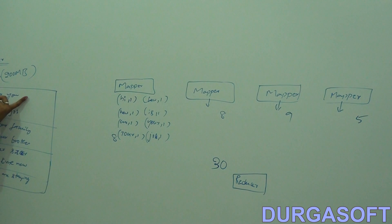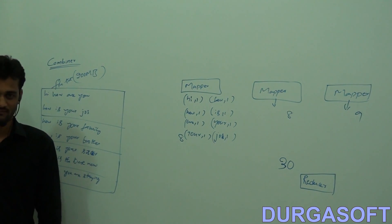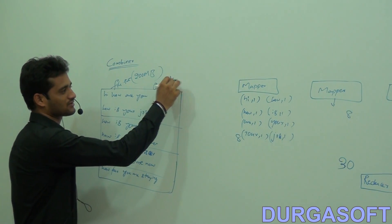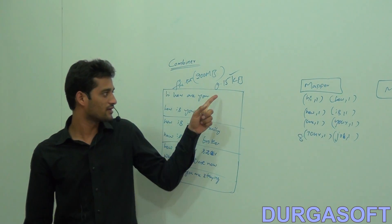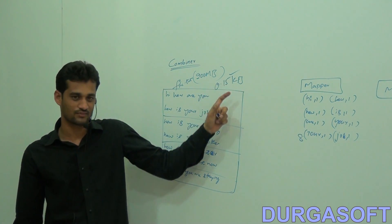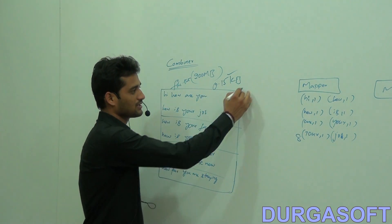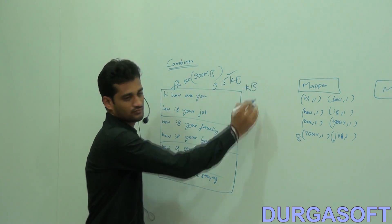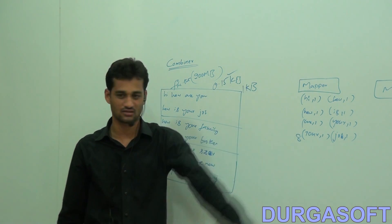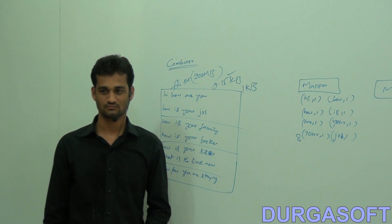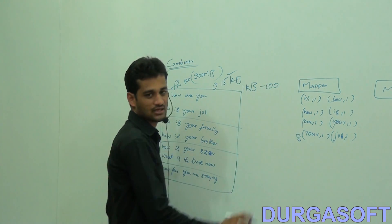Now consider what this file size actually is — it seems like about 0.15 KB, not 200 MB. For just 0.15 KB it is already generating 30 key-value pairs. If the file is 1 KB, how many key-value pairs would it generate?